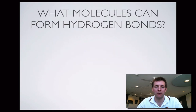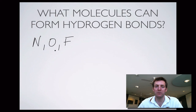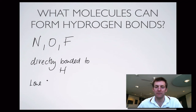So what molecules can form hydrogen bonds? As long as you've got a highly electronegative element — and by that we mean only three, which are in the top right corner of the periodic table where we'd expect to find the highly electronegative elements — you've got to have nitrogen, oxygen, or fluorine. That nitrogen, oxygen, or fluorine has to have a hydrogen directly bonded to it. So if your hydrogen is going to hydrogen bond with something, it has to be attached to a highly electronegative atom. And there has to be a lone pair on the nitrogen, oxygen, or fluorine.